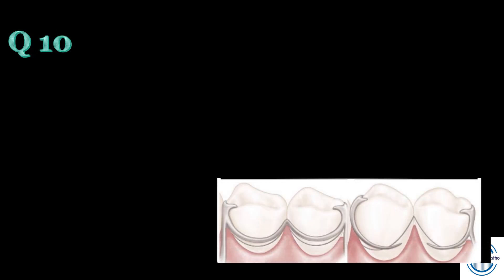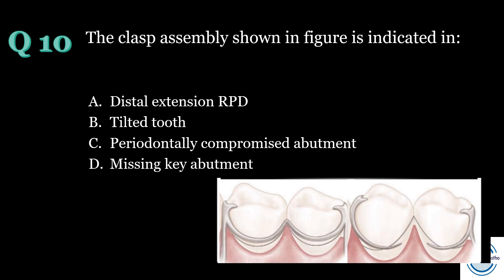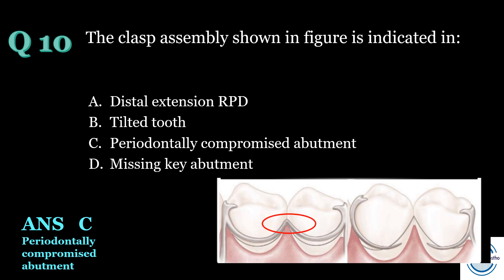Question number ten: the clasp assembly shown in the figure is indicated in — A. Distal extension RPD, B. Tilted tooth, C. Periodontally compromised abutment, D. Missing key abutment. The answer is C, periodontally compromised abutment. Looking at the picture carefully, it is a multiple circlet design in which the two reciprocal arms are joined at the terminal aspect. It is mainly indicated when the principal abutment is periodontally compromised, distributing forces between multiple abutment teeth.